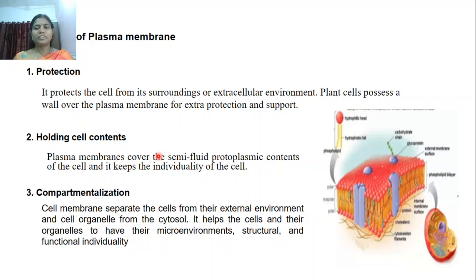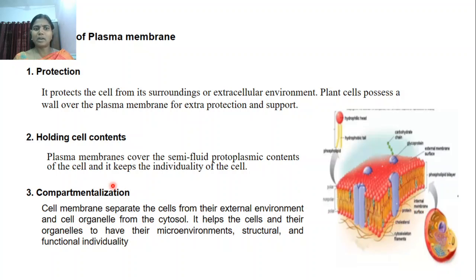Coming to the first slide, the first function as we all know it protects the cell from its surroundings and extracellular environment. The plant cell possesses a wall over the plasma membrane for extra protection and support, which we call the cell wall. The second important function is it holds the cell contents. The plasma membrane covers the semi-fluid protoplasmic contents of the cell and maintains the individuality of the cell.